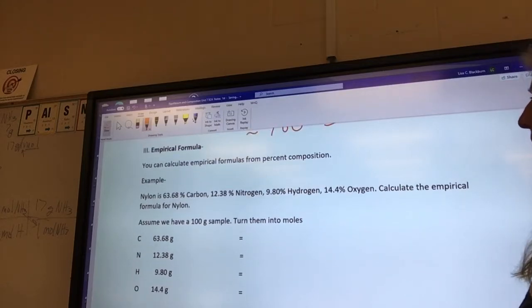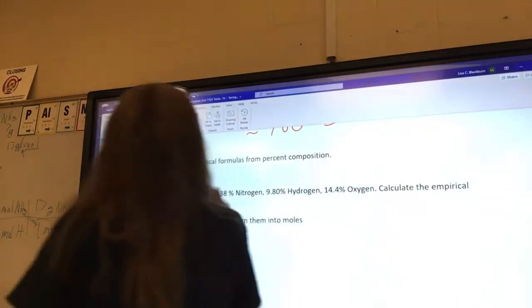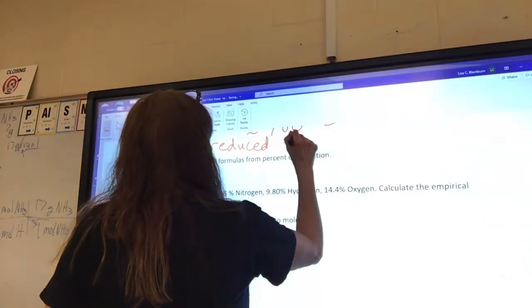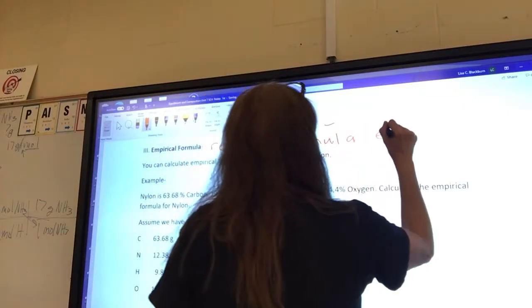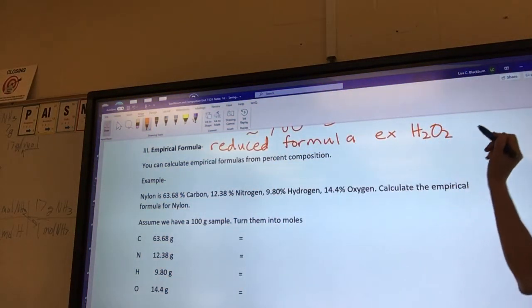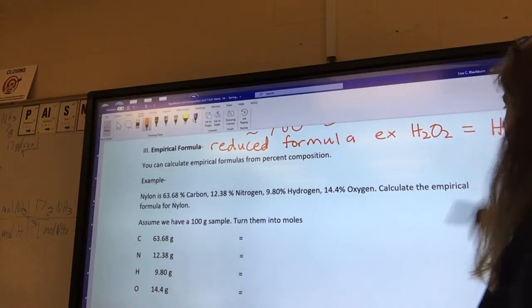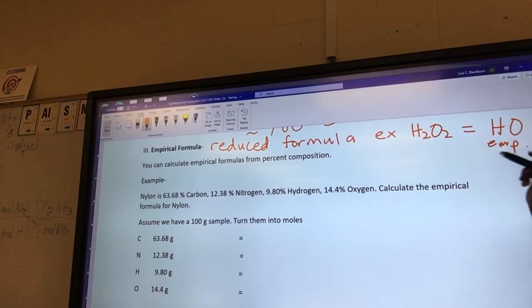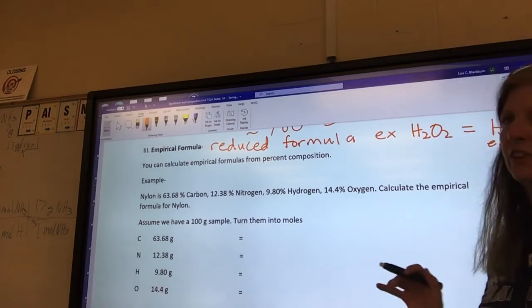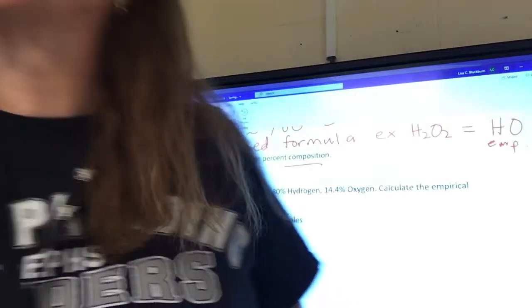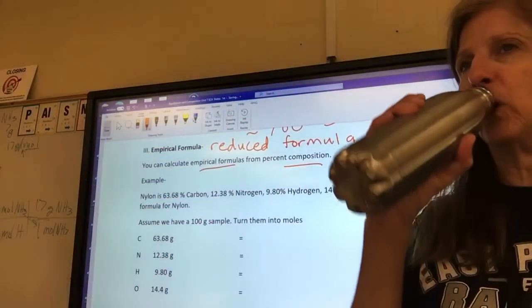The next thing is empirical formula. Empirical formula is a reduced formula. For example, hydrogen peroxide, you can divide two into both of those twos, right? So its empirical formula would just be HO. It's reduced. That's the empirical formula. So what we're going to do is we're going to, from the percent composition, we can get the empirical formula. And then, from the empirical formula, we can get the molecular formula. It's got two different parts.